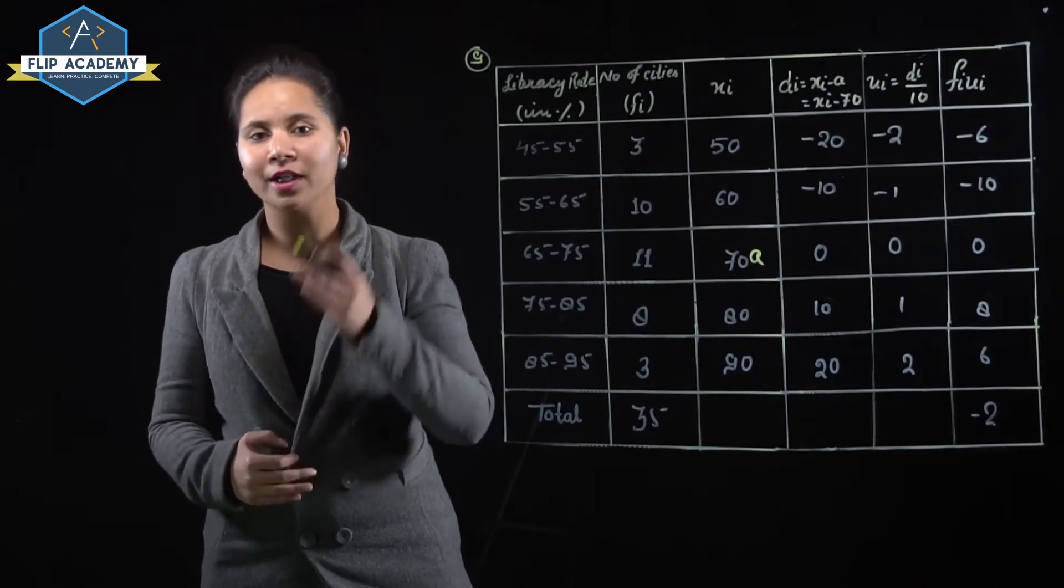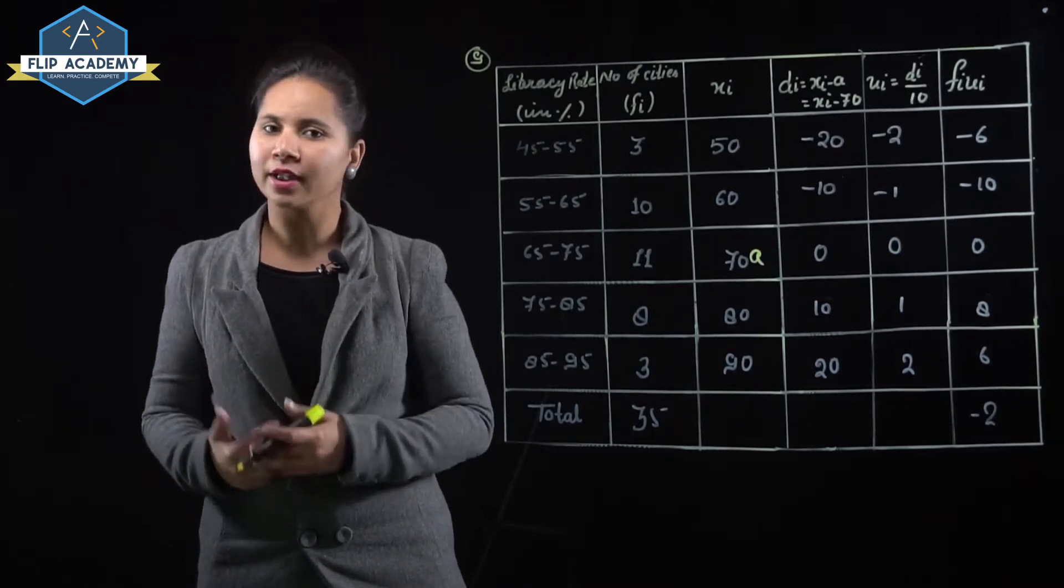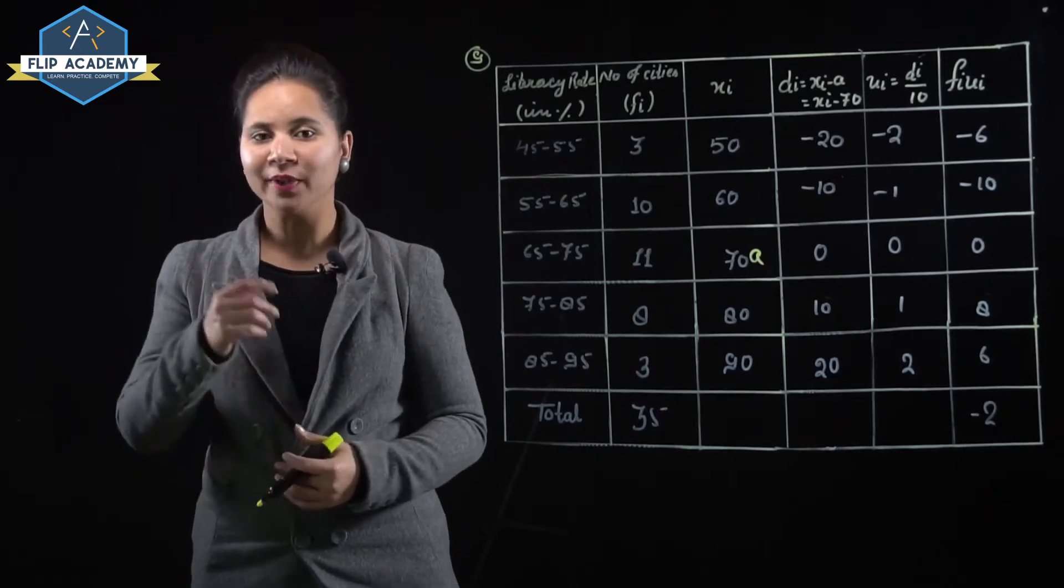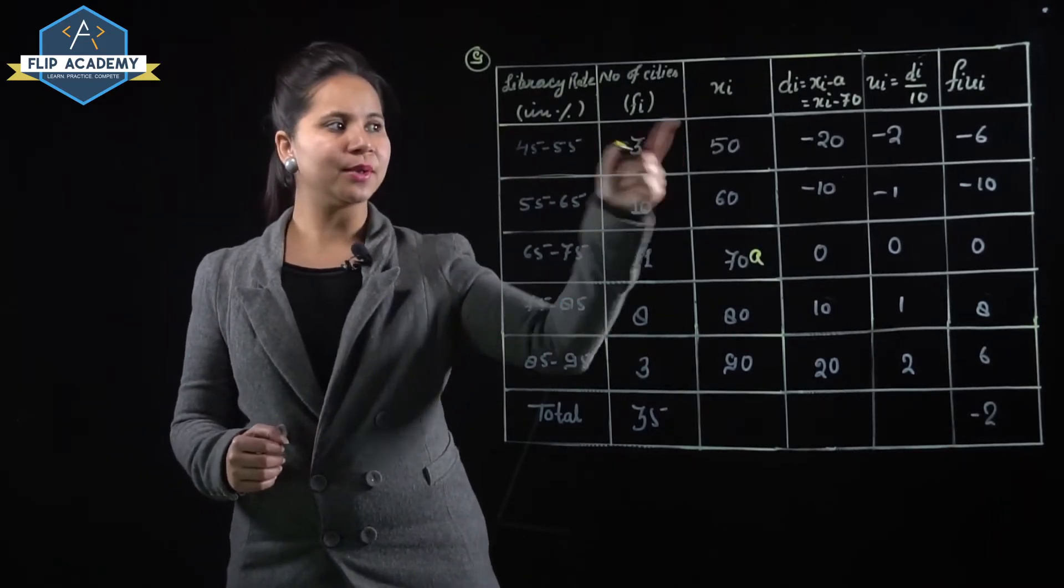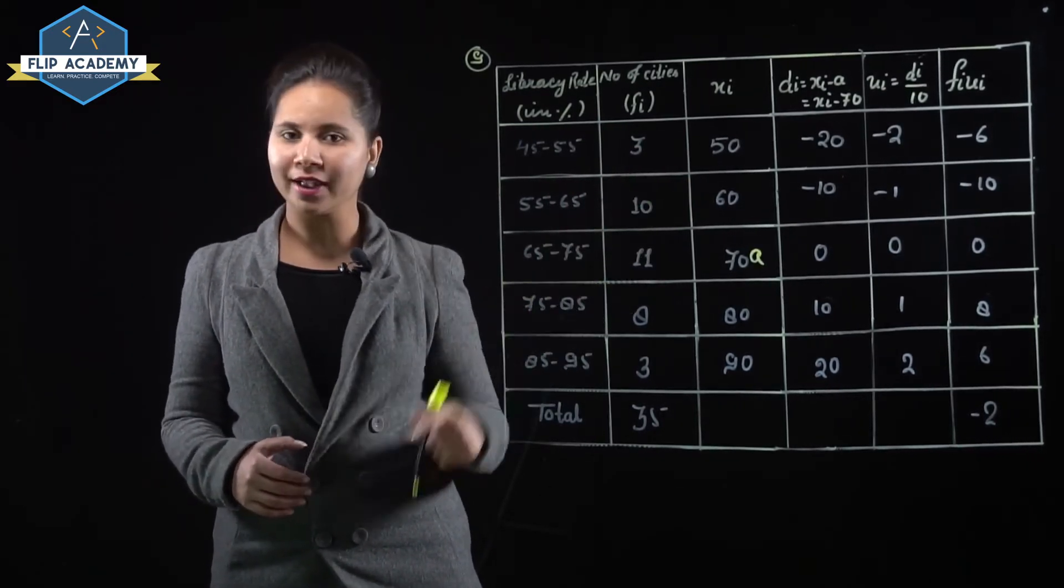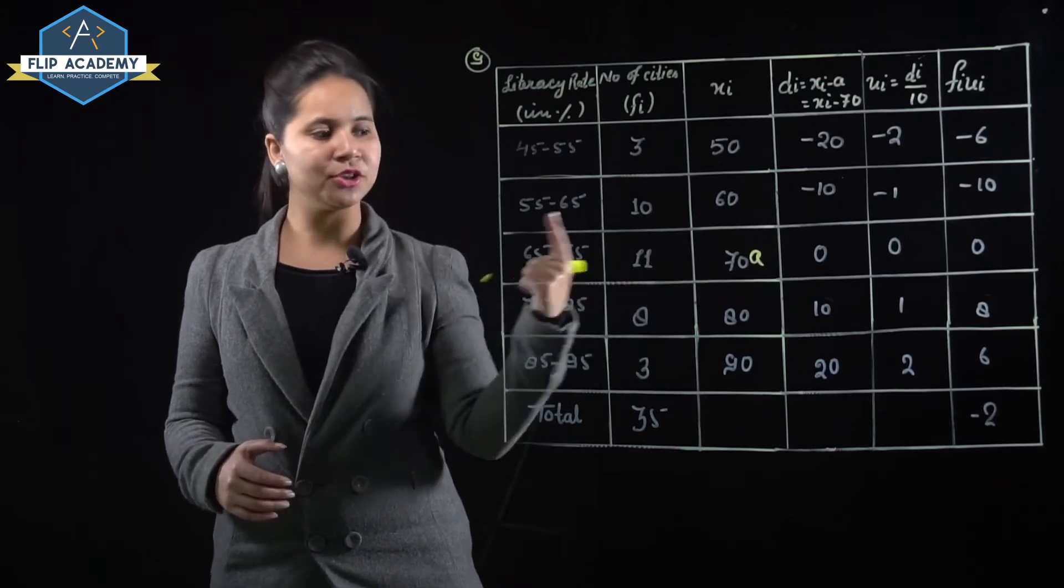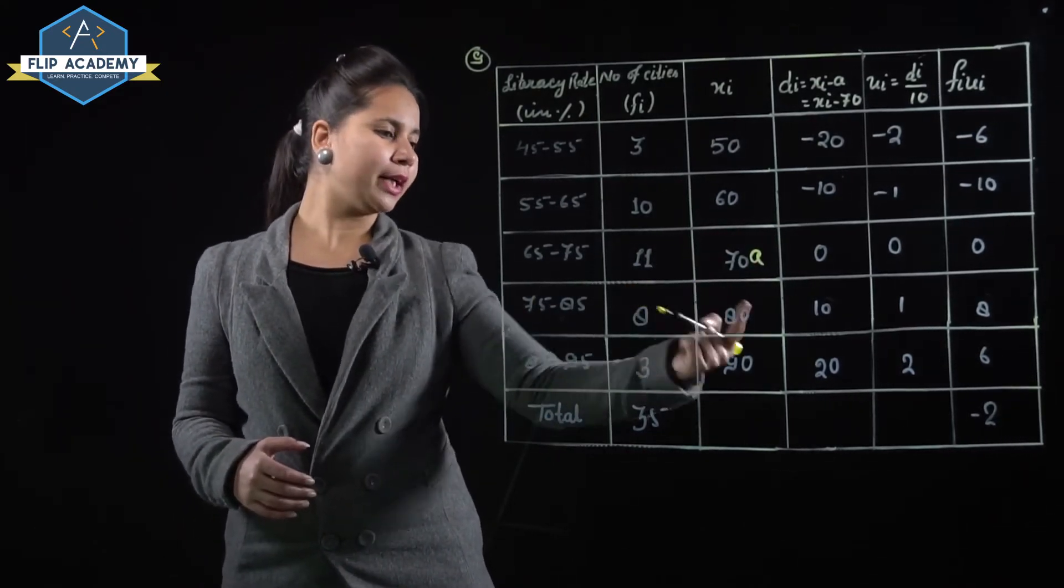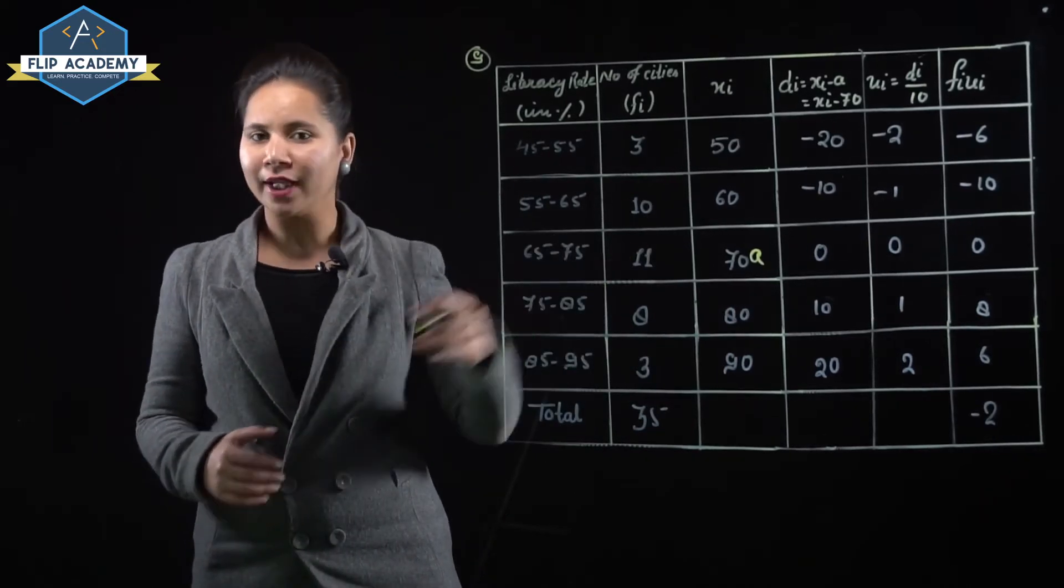Now ui equals di upon h. H is the class size. Class size is calculated as upper limit minus lower limit, which equals 10. So ui equals di upon 10. Minus 20 upon 10 equals minus 2, minus 10 upon 10 equals minus 1, 0 upon 10 equals 0, 10 upon 10 equals 1, 20 upon 10 equals 2. So we have the ui values.